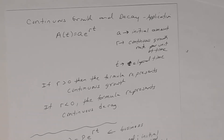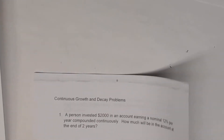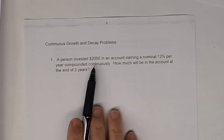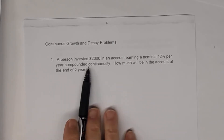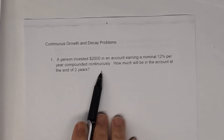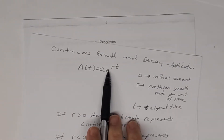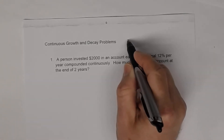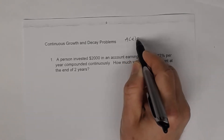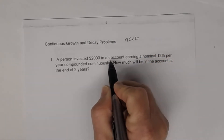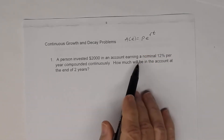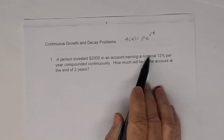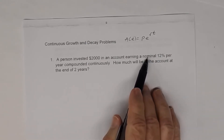Let's look at problem one. A person invested $2,000 in an account earning a nominal 12% per year compounded continuously. Since I see the word 'continuous,' I know I'm going to use A(t) = P times e to the rt. Note: 'nominal' means the interest rate without taking inflation into account.